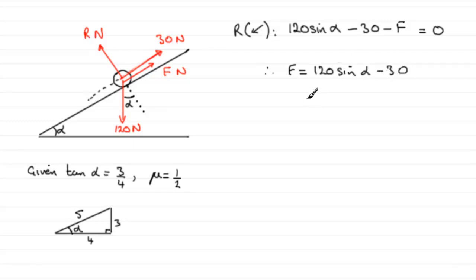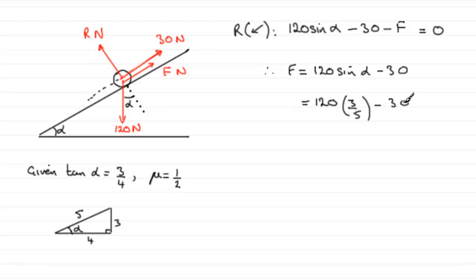If we put in our value for sine alpha — 120 sine alpha is opposite over hypotenuse, which is three over five, or three fifths — and then minus the 30. So if you do 120 times three fifths minus 30, you find that you get a frictional force F of 42 newtons.